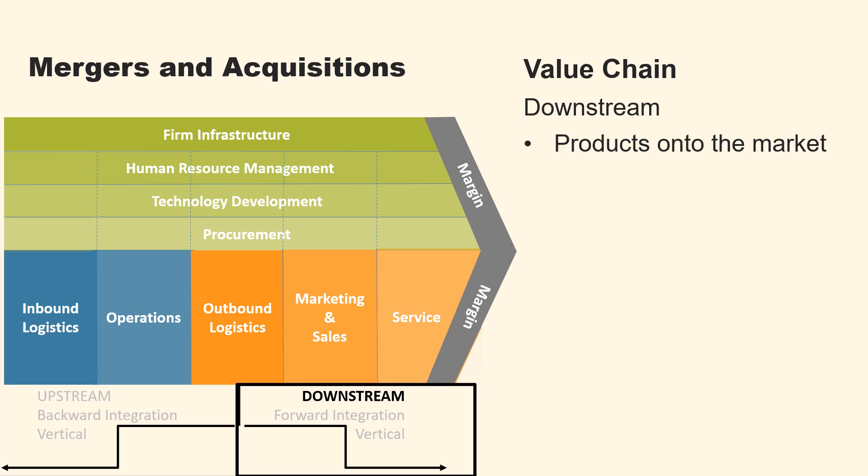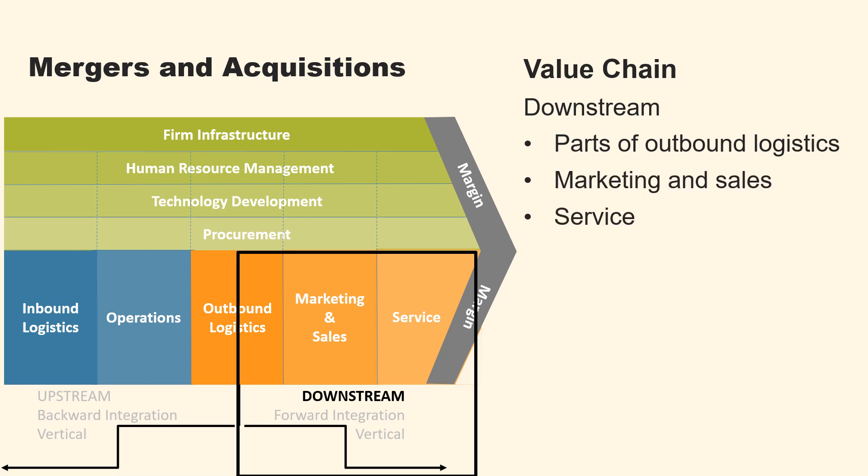Downstream, the company must consider how it will get its products onto the market. Downstream activities include three value activities: the other part of outbound logistics, marketing and sales, and services.